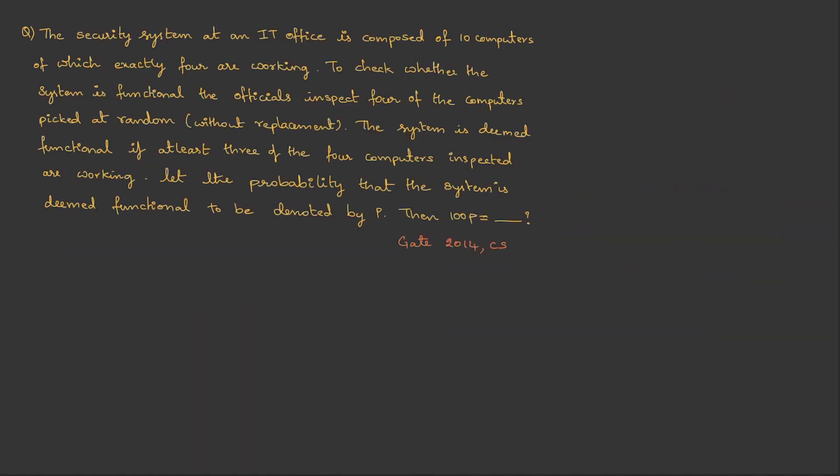Now, to solve this, let us draw the diagram. Here, they mention the number of computers to be 10. So, n is 10. And here, the two categories are working and non-working. And they mention that exactly 4 are working. So, working are 4. Obviously, non-working will be 6. Then, they said that the officials have inspected 4 of the computers. So, the selection, the small n, is 4.